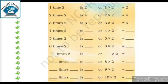So 4 times 2 is 8. 4 times 2 is 8. 5 times 2 is 10. 5 times 2 is 10. 6 times 2 is 12.